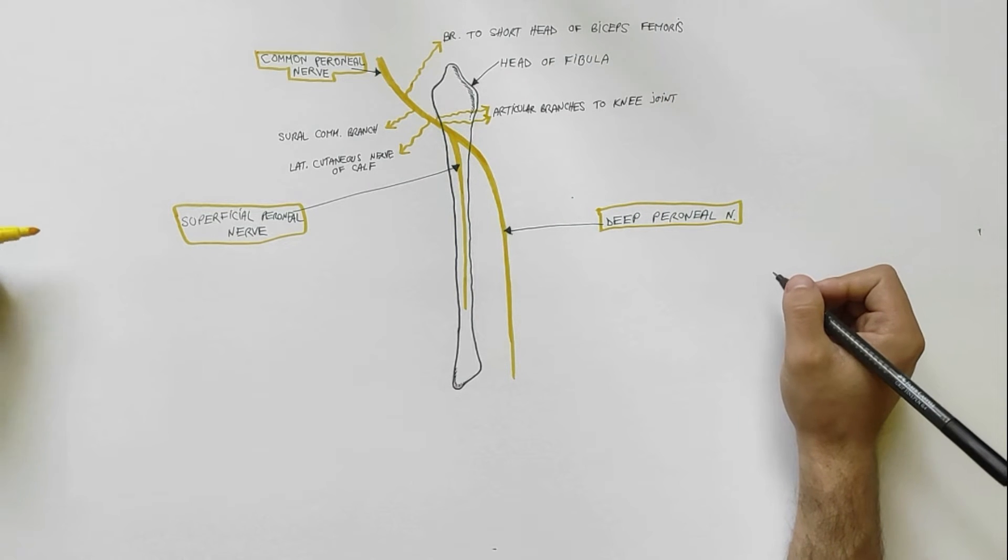Now we will draw the branches of the two terminal branches of the common peroneal nerve, and we will start with the deep peroneal nerve.